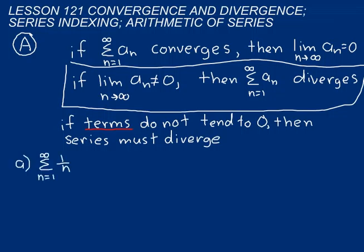Let's go ahead and do some practice problems. Determine if this series converges or diverges. Well, let's take the limit. If the limit as n approaches infinity of a sub n, which is 1 over n in this case, if that is not equal to 0, then it diverges. However, this one is equal to 0.